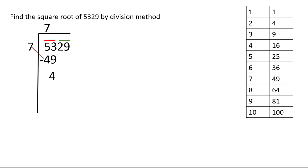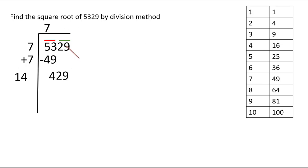Now we write this 7 down and add 7 to the previous 7 to get 14, writing it a little away from the line with a space to insert the next digit. So we have 14 here and a remainder of 4 with 29 to bring down. We bring 29 down — numbers are always brought down in pairs. Now we need to find what digit comes after 14 such that the same digit multiplied to this number gives 429 or a little less.